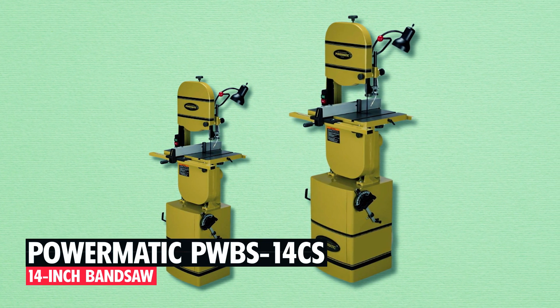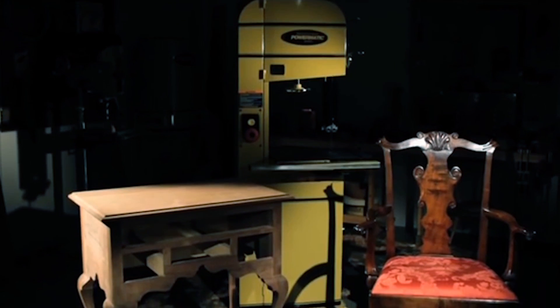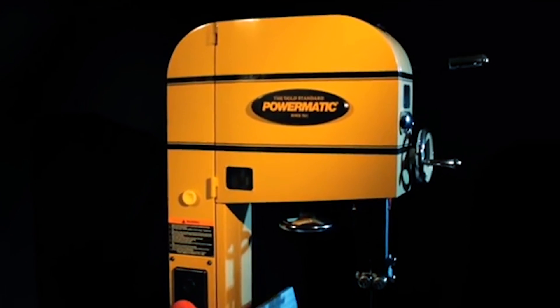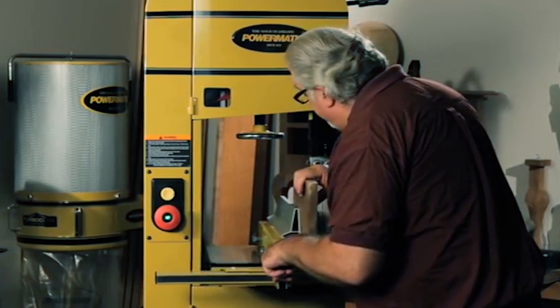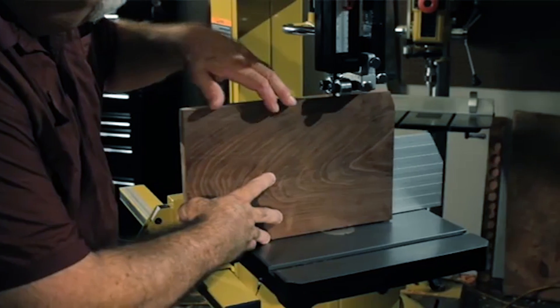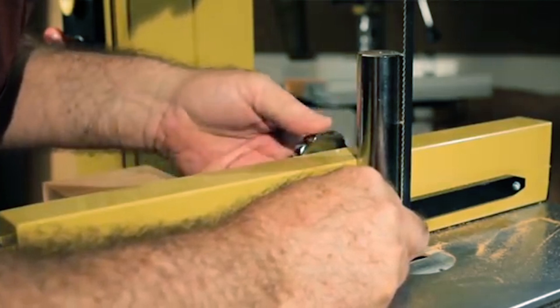POWERMATIC PWBS14CS 14-inch Bandsaw. The Powermatic PWBS14CS 14-inch Bandsaw is a pinnacle in precision and stability, designed for both professionals and hobbyists. Crafted with balanced cast-iron wheels and a sturdy steel base, it minimizes vibrations for cleaner cuts. Its advanced features include a chip blower, micro-adjustable dual-bearing blade guide system, and an adjustable lamp for enhanced visibility.